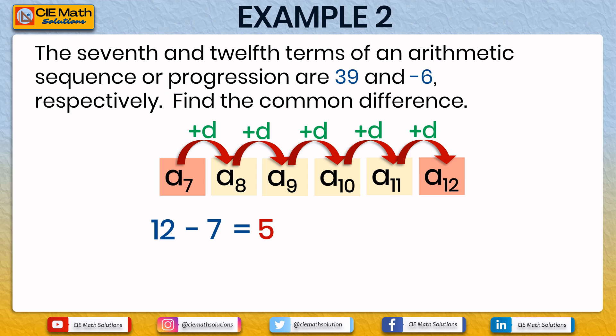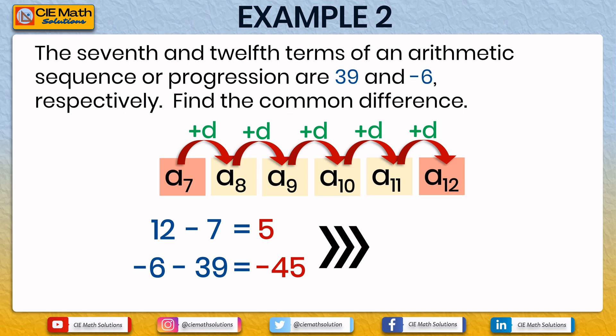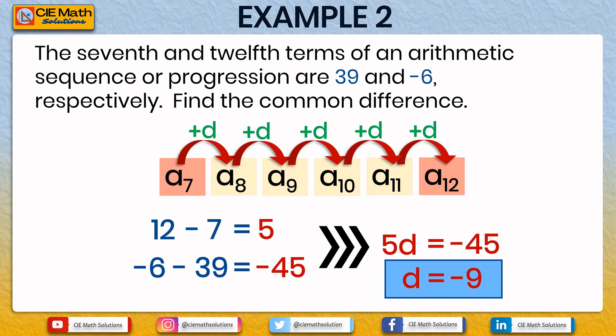Subtracting the values of A12 and A7, negative 6 minus 39 equals negative 45. We then have 5d equals negative 45. Dividing both sides by 5, d equals negative 9. The common difference of this arithmetic sequence is negative 9.